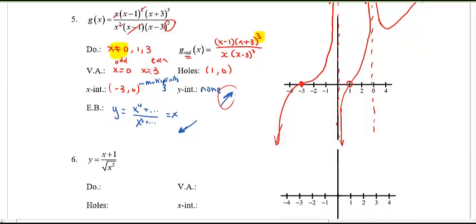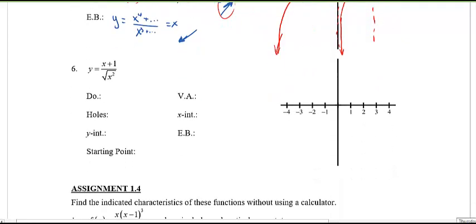I'm going to do it together with you. Number six is kind of weird, especially that root x squared. Remember what root x squared was from before? If you said the absolute value of x, I'm smiling. Good. So domain here, of course, can't be zero. We're not simplifying anything. So that means our vertical asymptote is zero. Let me draw that in.